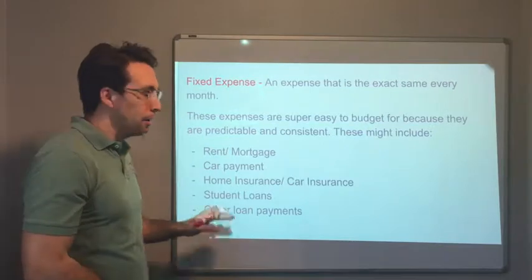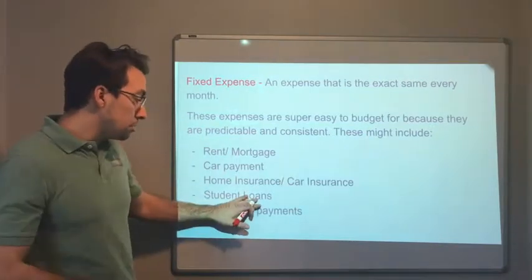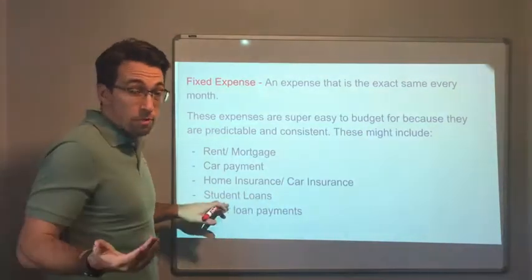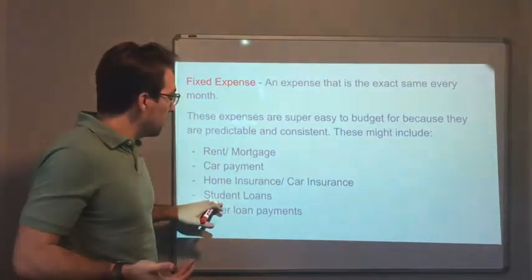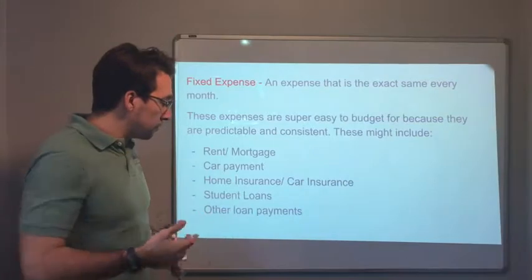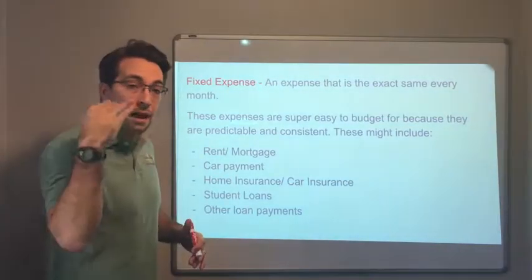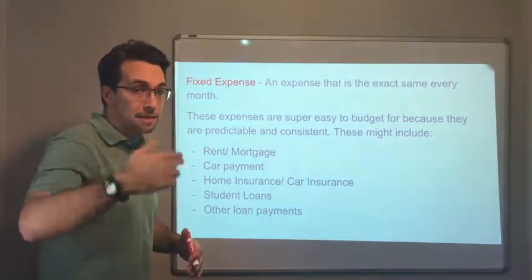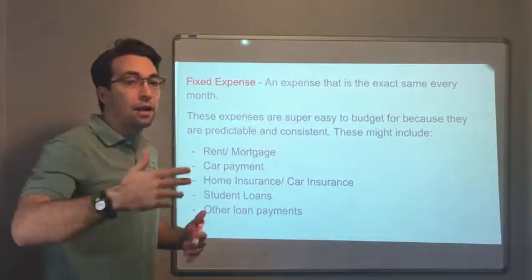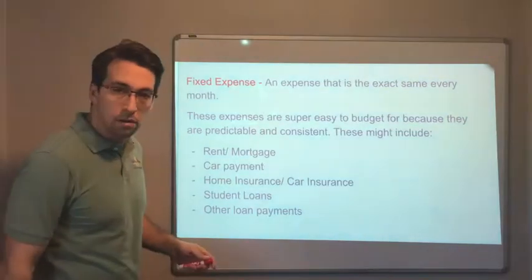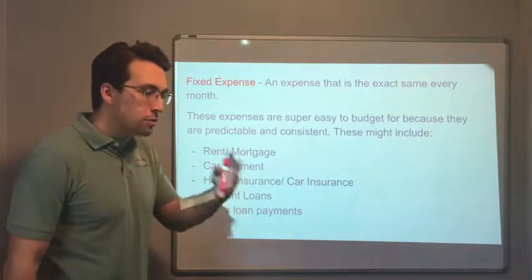Home insurance and car insurance are always the same monthly bill. Student loans, or really any type of loan payment, are fixed because every month you pay the same amount until the loan is paid off.